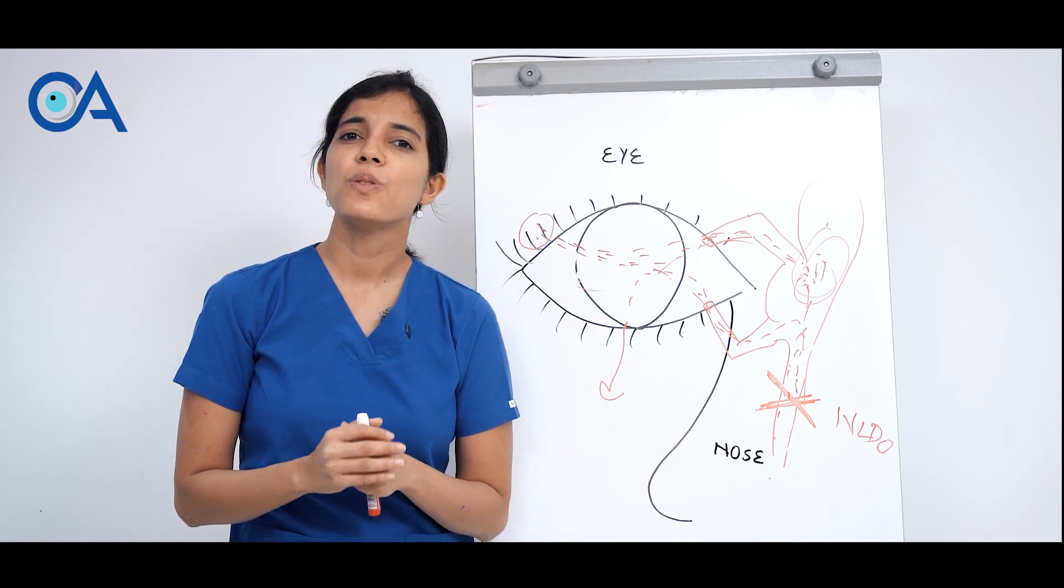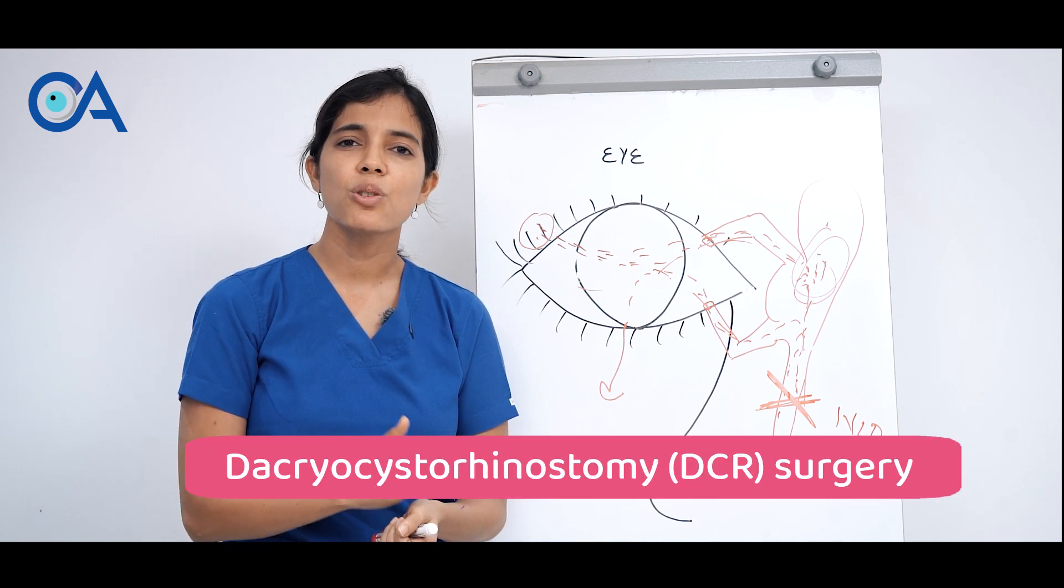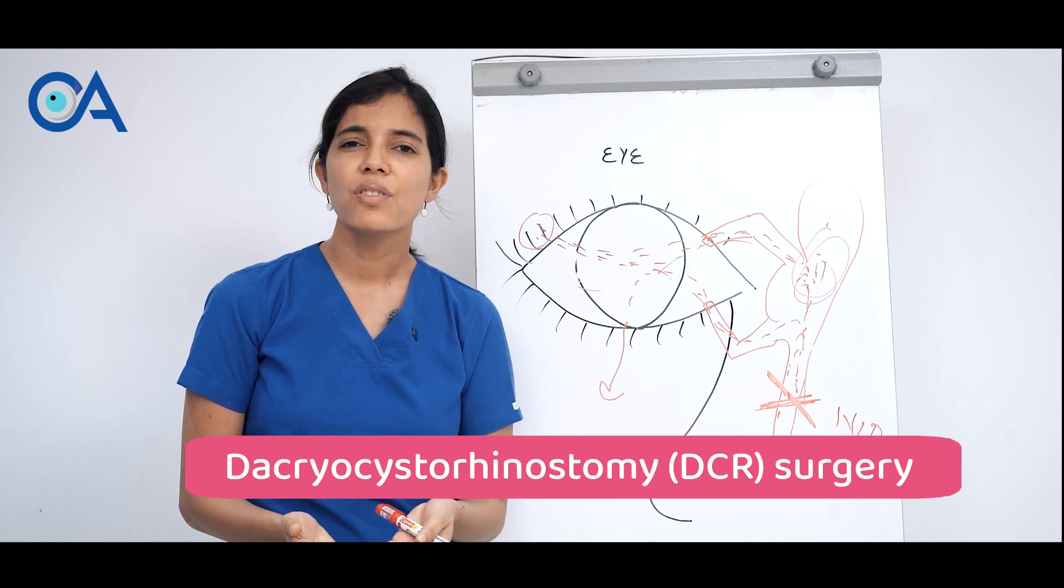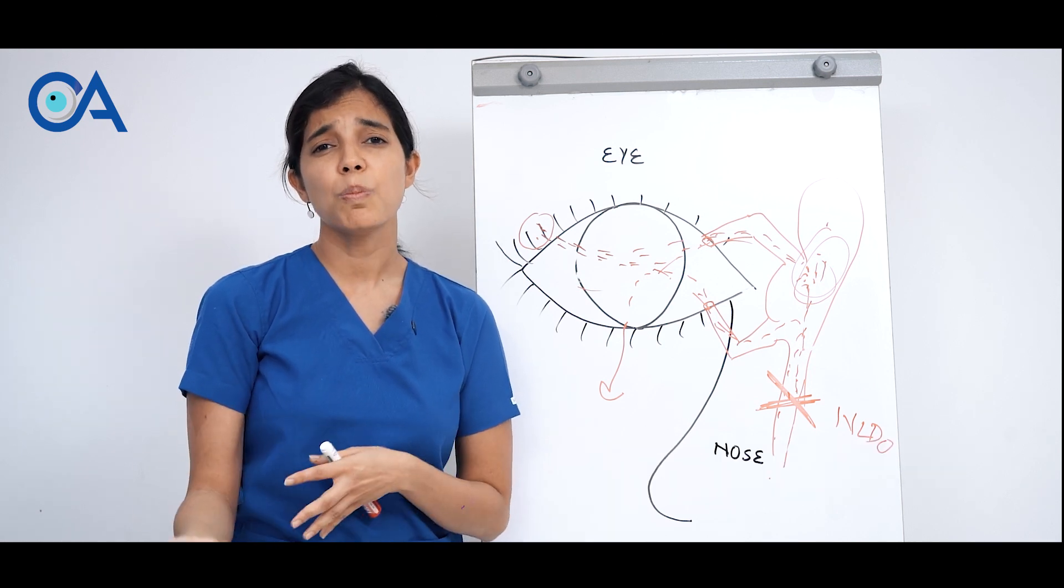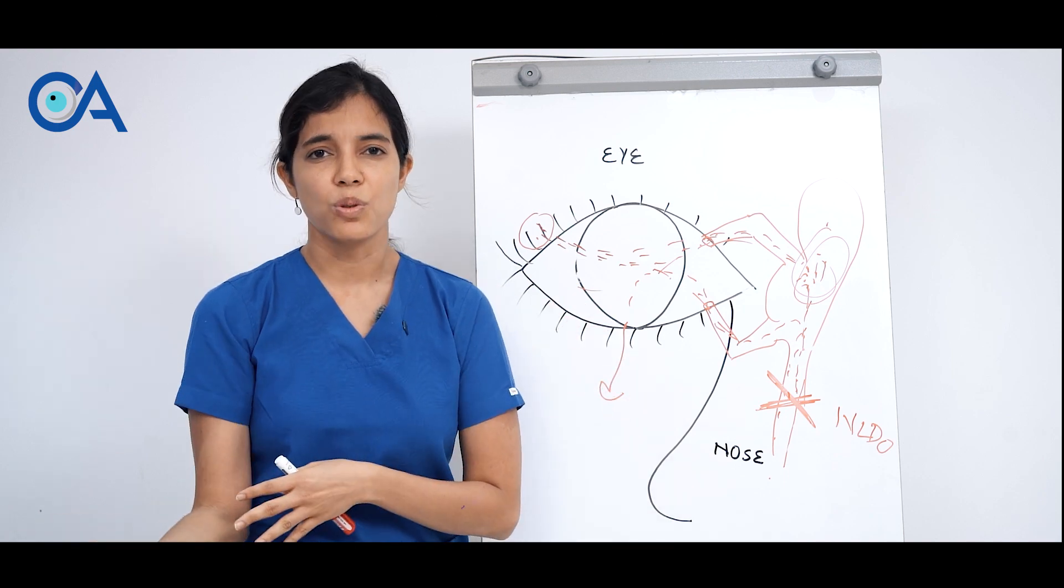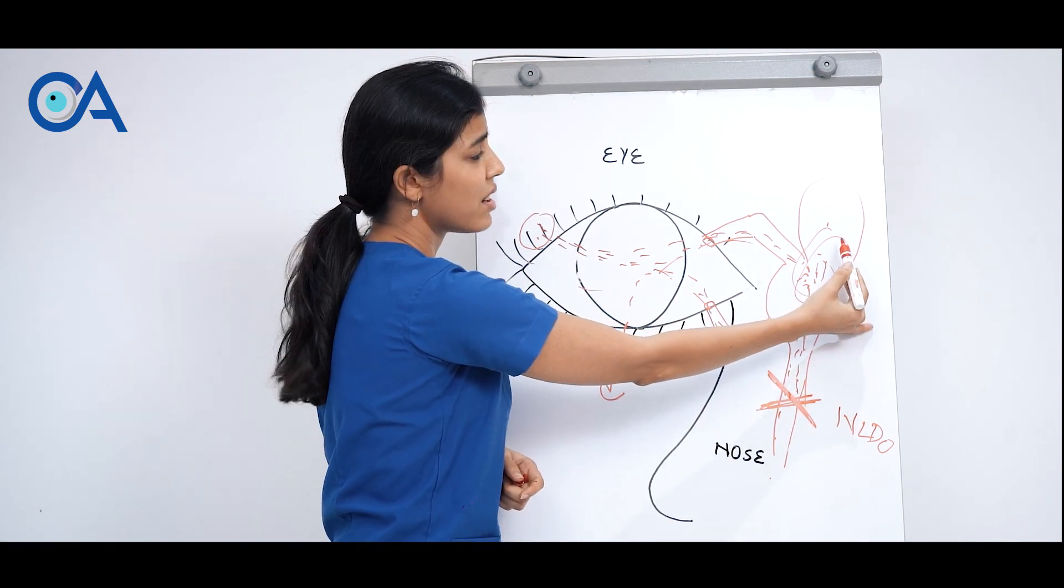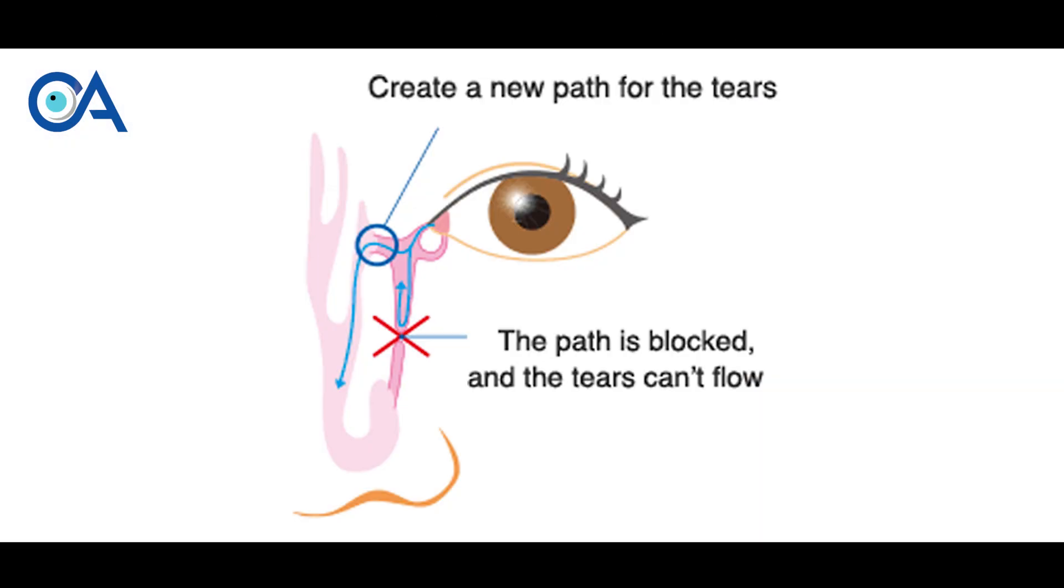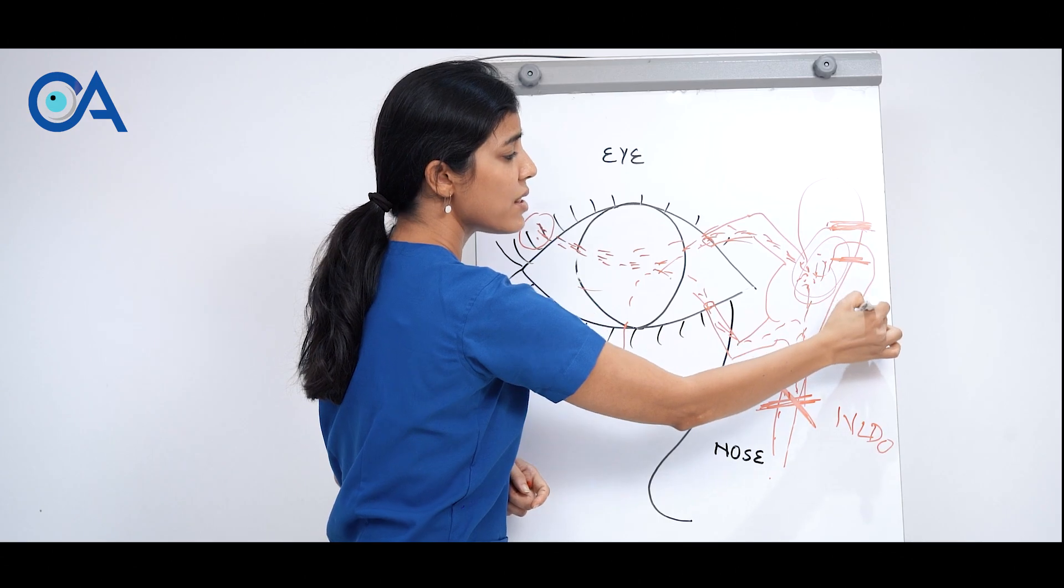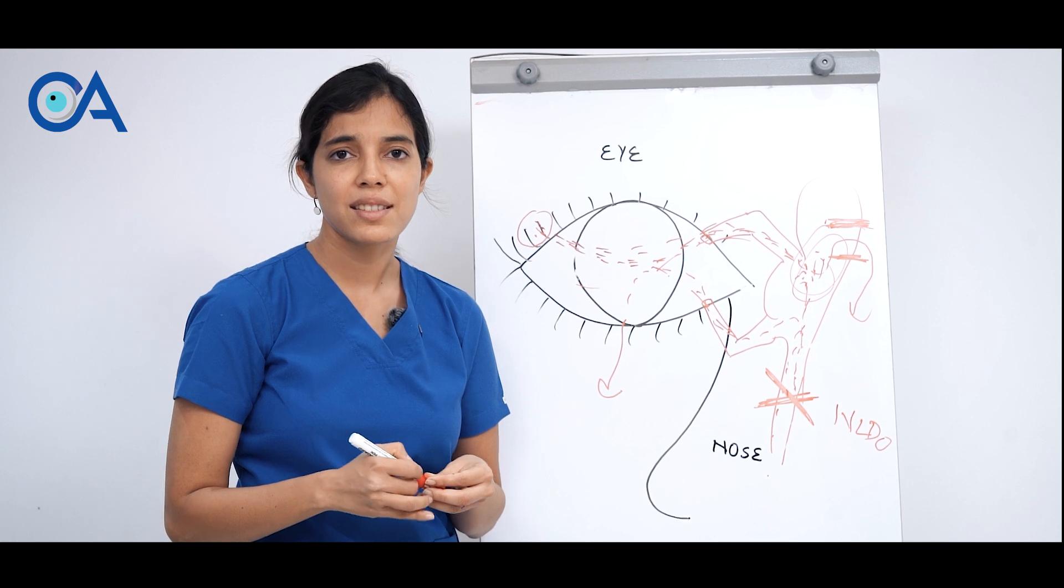What is the treatment for this condition? There's a surgery called DCR, Dacryocystorhinostomy. In simple words it is basically making a bypass or a new pathway between the eye and the nose. In this surgery this is our tear sac, so here we make a new pathway. The tears will drain from this new pathway into the nose. This is what we are essentially doing in this surgery.